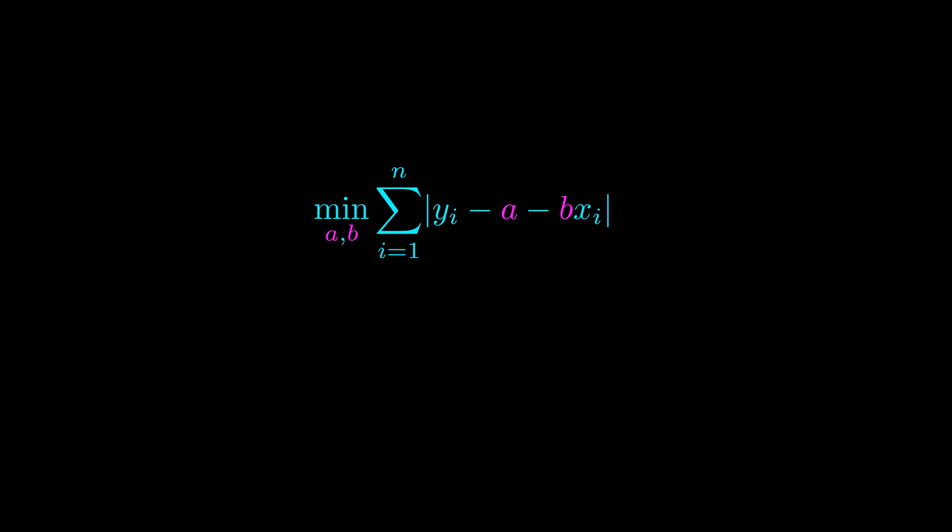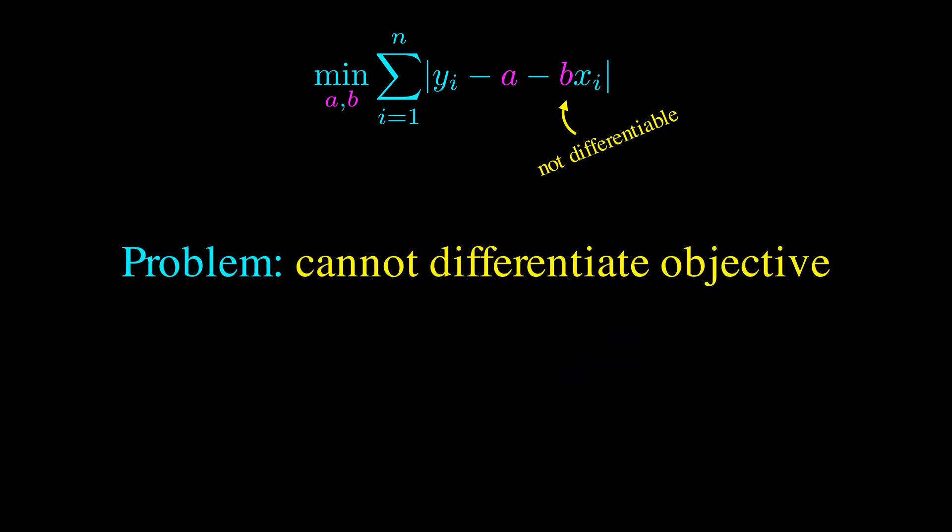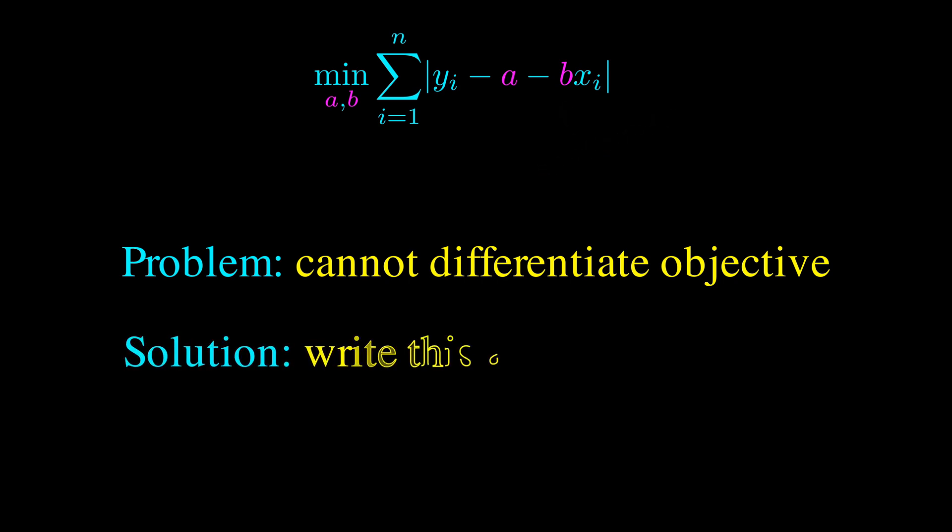One difficulty is that we can't differentiate the objective. This is because the absolute value function is not differentiable at zero. So we can't differentiate the function as we did for the least squares problem. However, not all hope is lost. We can actually write this as a linear program, although we need to use a few tricks.